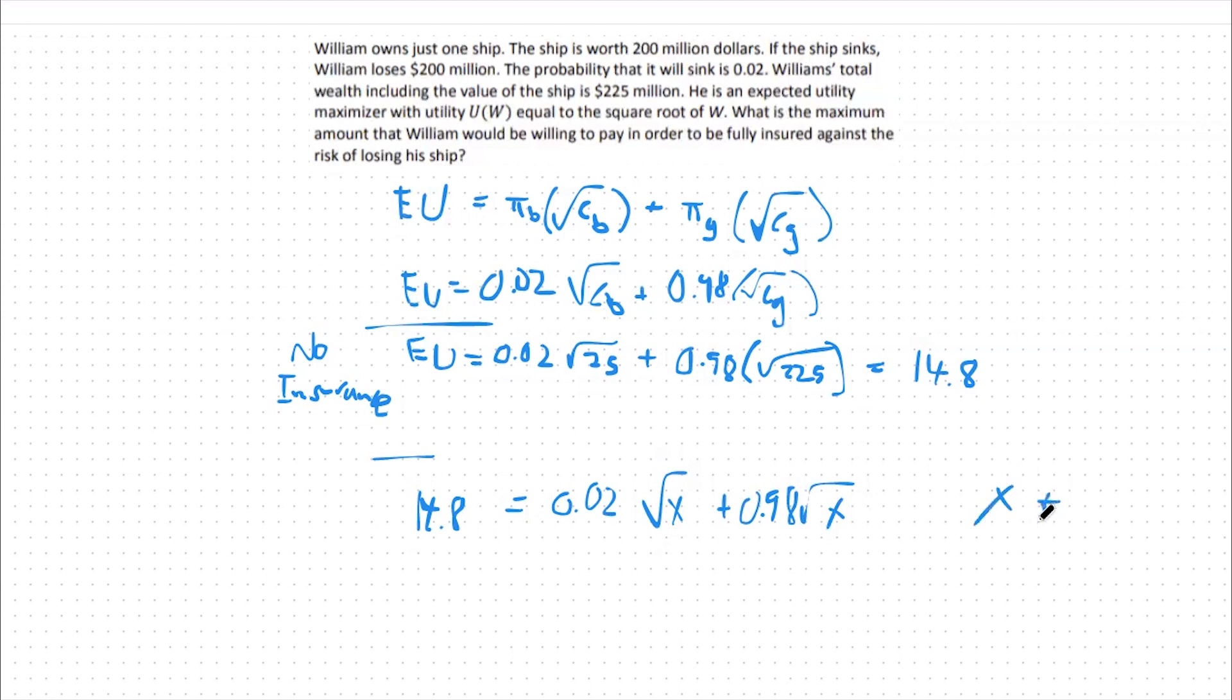As a side note, what we're going to say x is, is a variable that represents that consumption in the bad state and consumption in the good state are equal to each other under full insurance. So this will be our full insurance equal to our no insurance case.